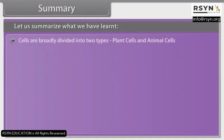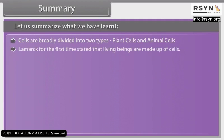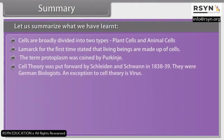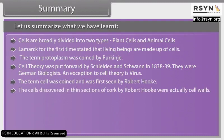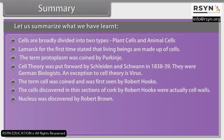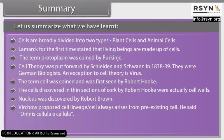Cells are broadly divided into two types: plant cells and animal cells. Lamarck was the first to state that living beings are made up of cells. The term protoplasm was coined by Purkinje. Cell theory was put forward by Schleiden and Schwann in 1838 to 1839; they were German biologists. An exception to cell theory is the virus. The term cell was coined and first seen by Robert Hooke. The cells discovered in thin sections of cork by Robert Hooke were actually cell walls. Nucleus was discovered by Robert Brown.